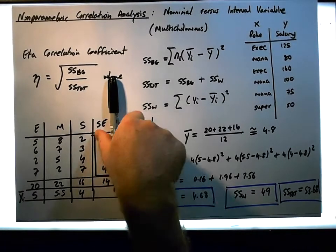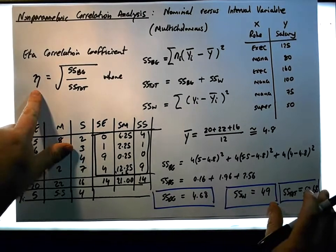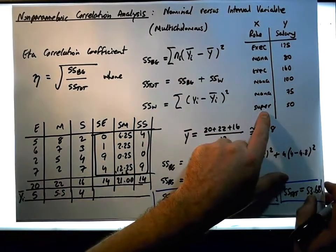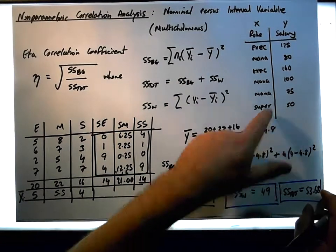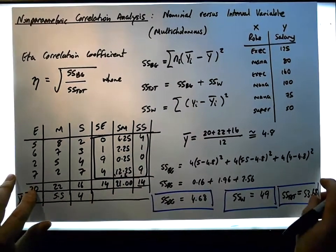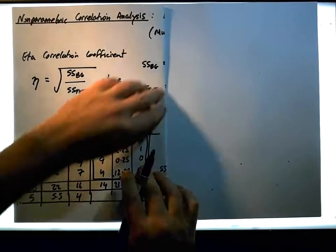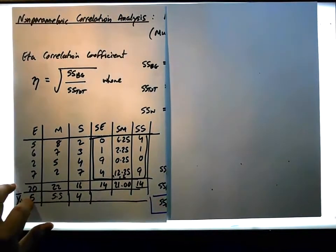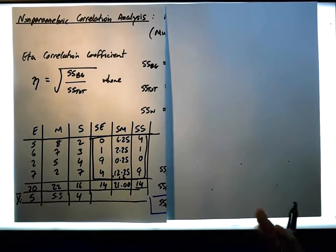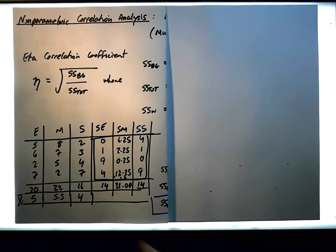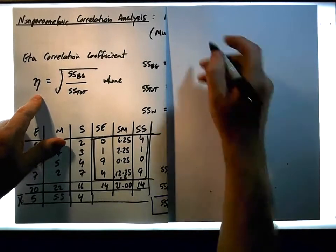So now we're in business. Now we can actually calculate the eta value, the correlation between this multichotomous nominal variable and this variable measured on an interval stroke ratio scale of measure. The eta correlation coefficient, not eta squared. Eta squared would be a goodness of fit measure. It would be the amount of variance explained.